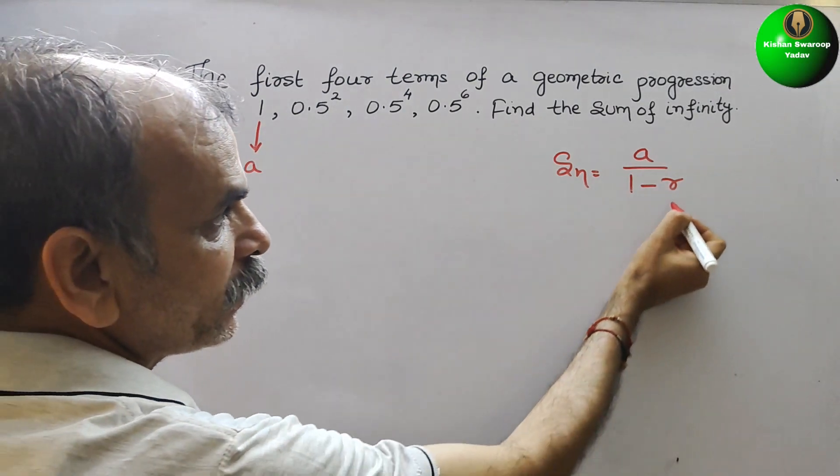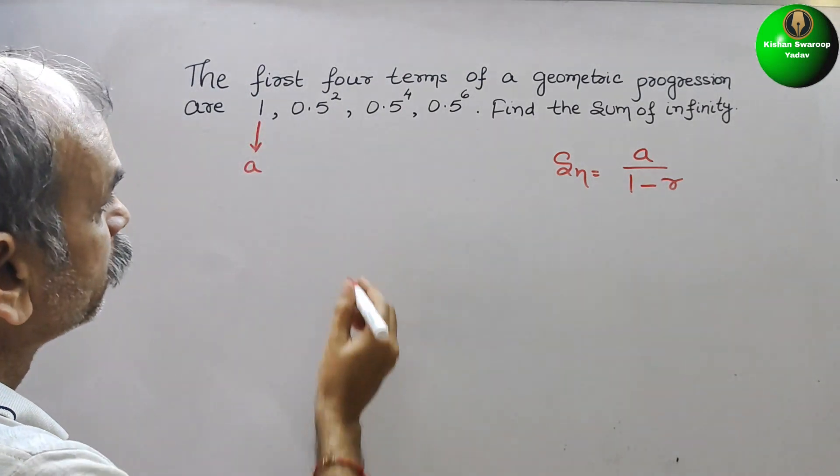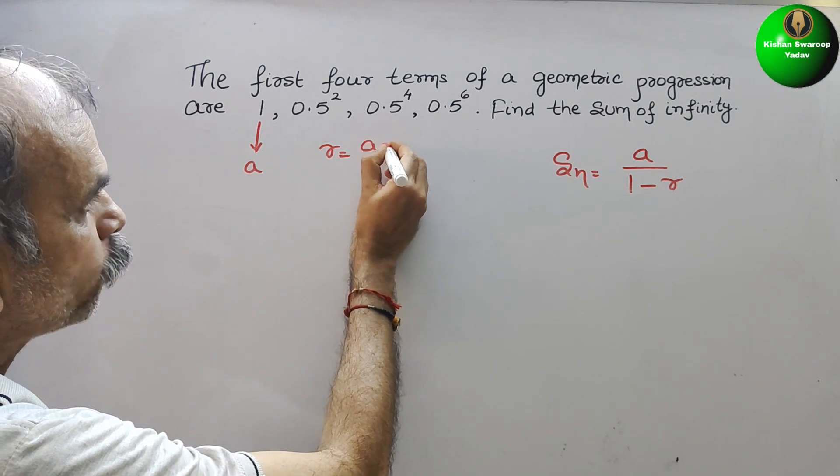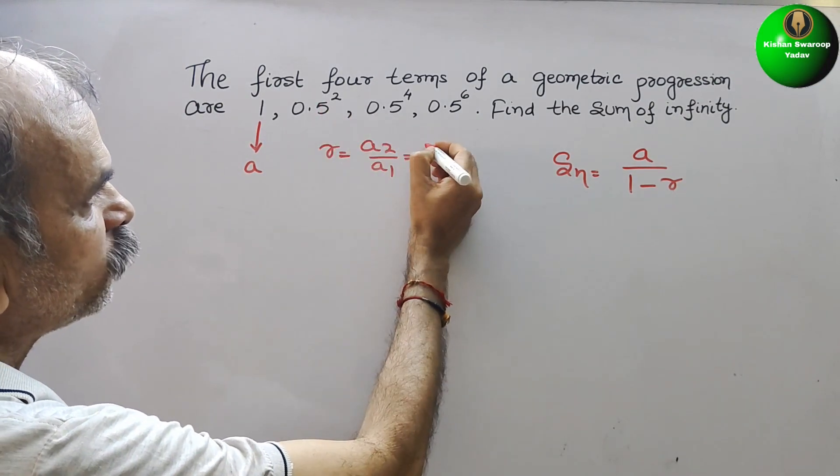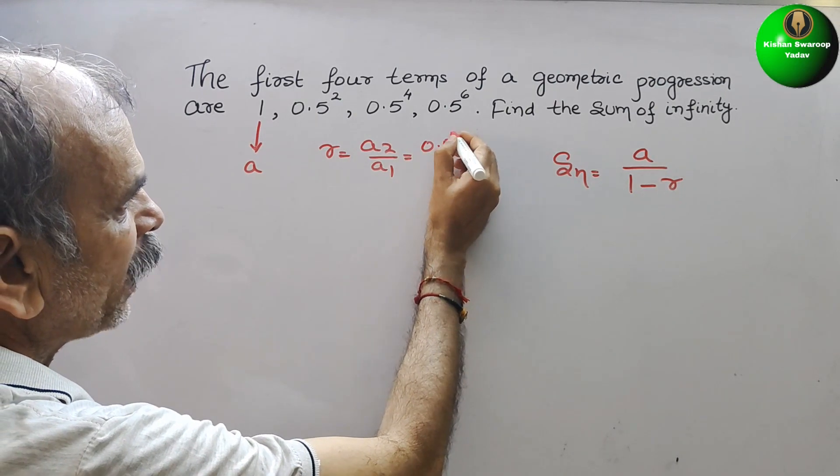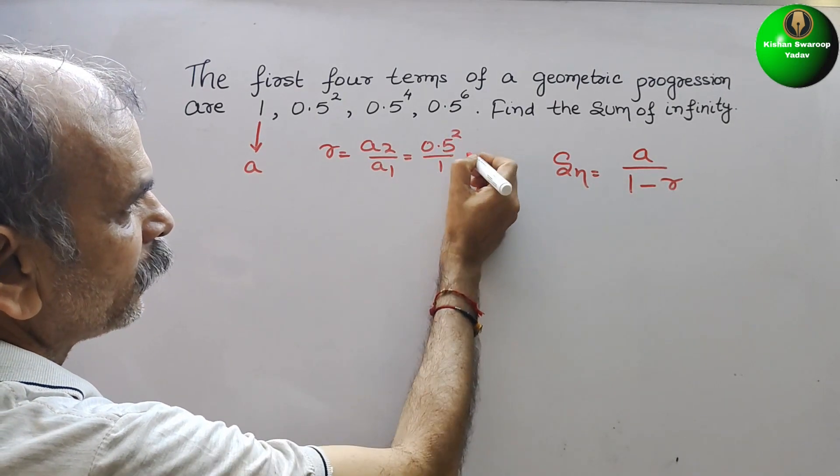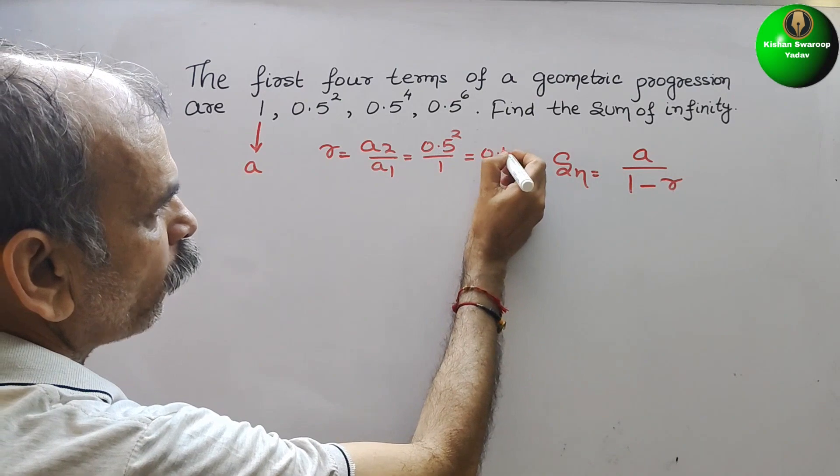Next, we will find r. r is nothing but a2 by a1. That is 0.5 square by 1. That is equal to 0.5 square.